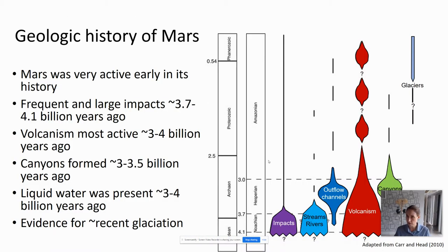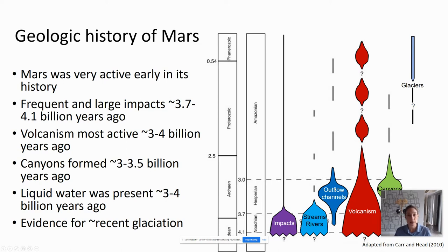When were all these processes active on the Martian surface? Mars was very active early in its history. Frequent and large impacts were forming about 3.7 to 4.1 billion years ago. Volcanism was most active about 3 to 4 billion years ago, with punctuated pulses throughout Mars's history. Valles Marineris formed about 3 to 3.5 billion years ago. Liquid water was most prevalent about 3 to 4 billion years ago, forming streams, rivers, deltas, lakes, and massive outflow channels. There is also some evidence for fairly recent glaciation in the last billion years.